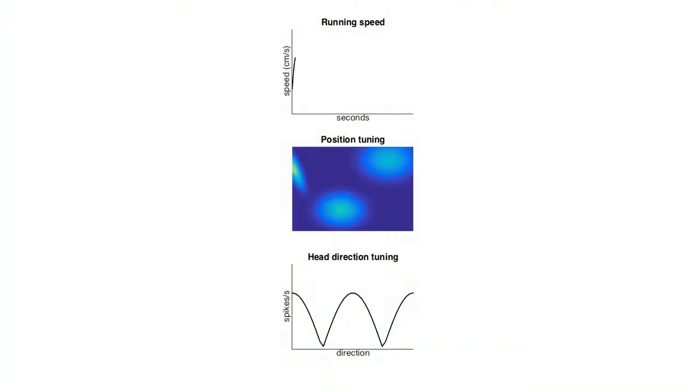Finally, we observed that the position and head direction codes change with the animal's running speed. In particular, the position and directional codes become sharper with faster running speeds. This is a really interesting finding because it suggests that the neural codes in entorhinal cortex are not static, but in fact, they can flexibly change with the animal's behavior.